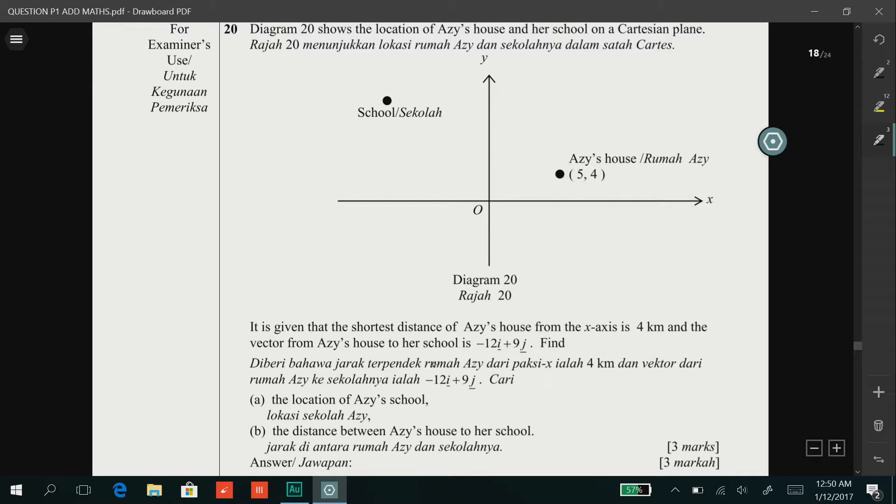For question A, the location of Aziz's school. To find the location of Aziz's school, we need to find the coordinates of the school. We know that from the question -12i + 9j represents the vector of Aziz's house to her school. i here represents the x value and j here represents the y value.